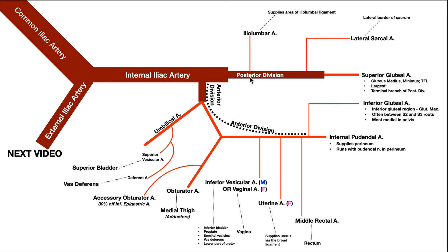Let's first talk about the posterior division of the internal iliac artery. It gives off three branches. The first one is the iliolumbar artery, which supplies the area around the iliolumbar ligament. When we covered the SI joint and pelvic ligaments, we talked about the iliolumbar ligament — a series of ligaments that connect the ilium, part of the iliac crest, to the lower lumbar vertebrae, particularly their transverse processes.